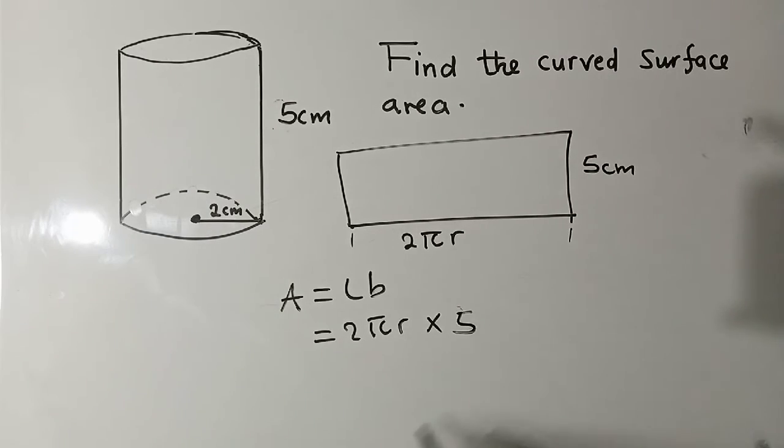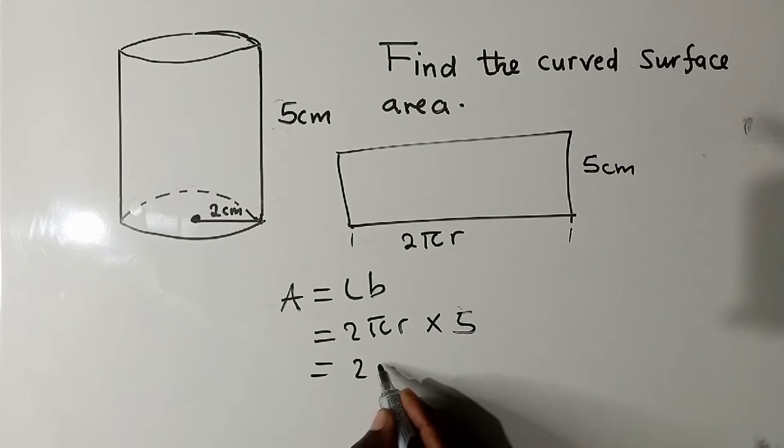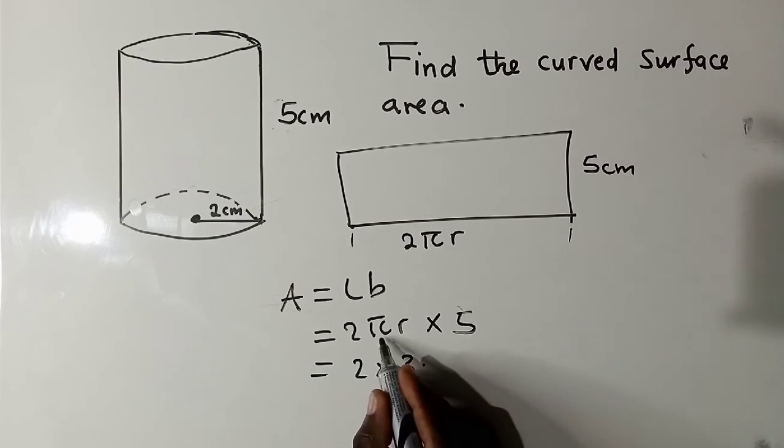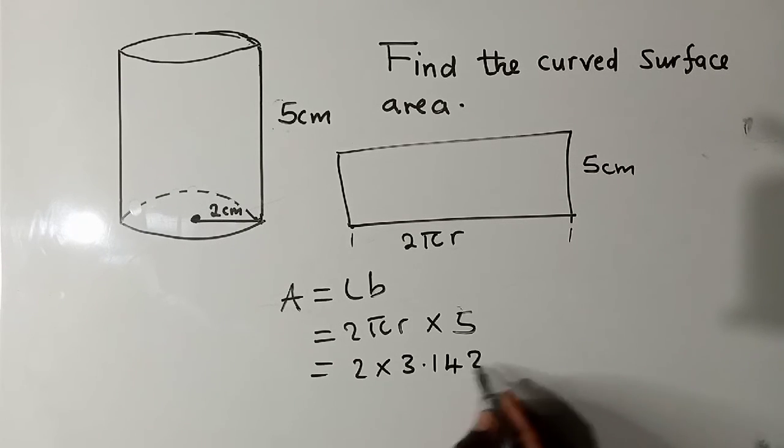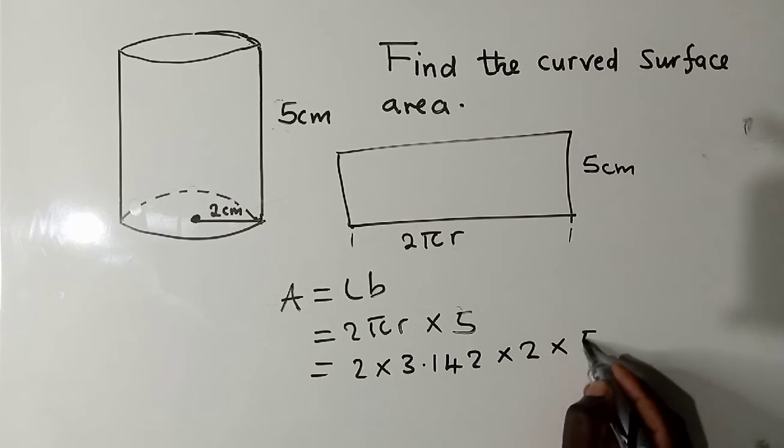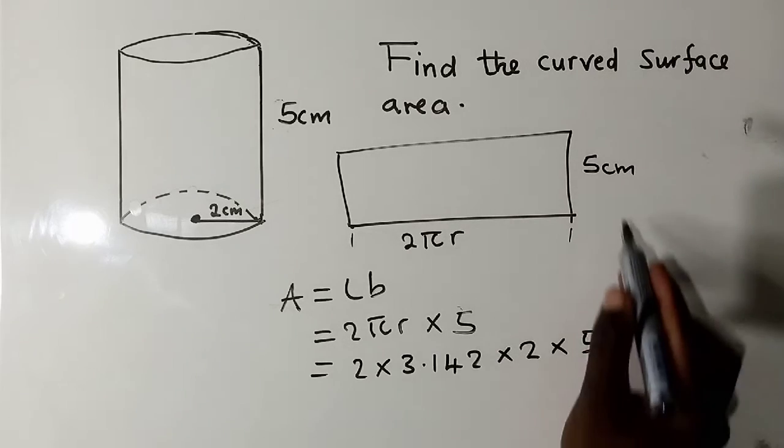The height which is five. So the next thing here would just be to multiply these things. We have our π times the radius, which is two, times the height which is five.